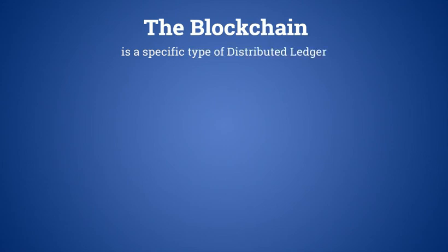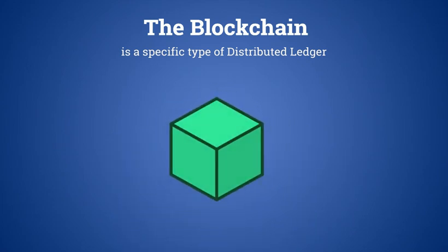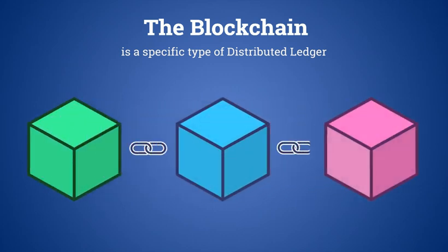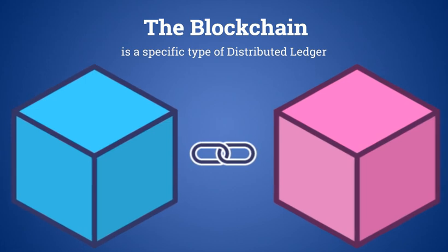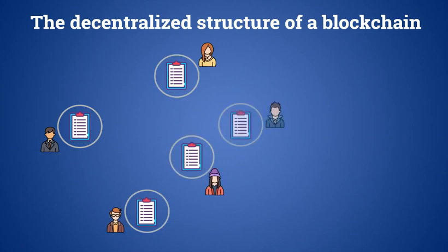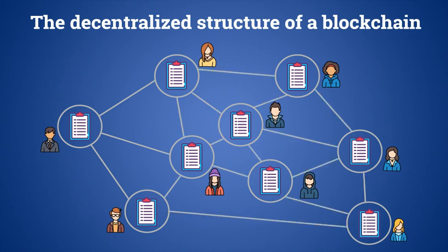Blockchain is a particular type of distributed ledger which has some additional features: information is grouped and stored in blocks, and blocks are connected to each other in chronological order, forming a chain. The connection among blocks is ensured through the use of encryption. The decentralized structure of the blockchain ensures that identical copies of all information are shared across all nodes in the network, and users validate said information independently without a central authority.